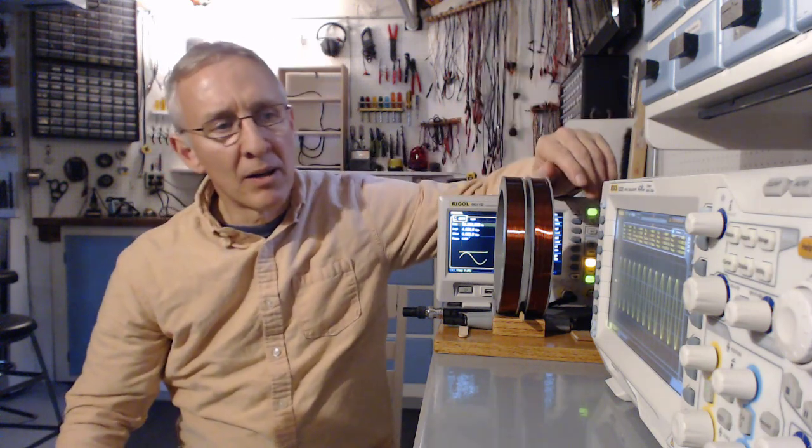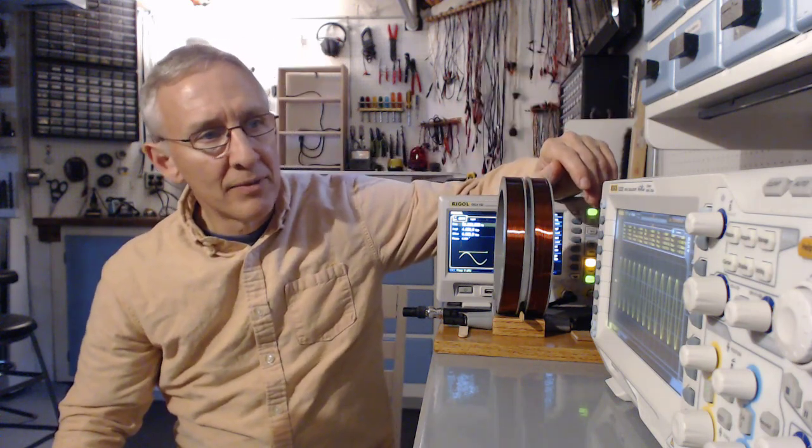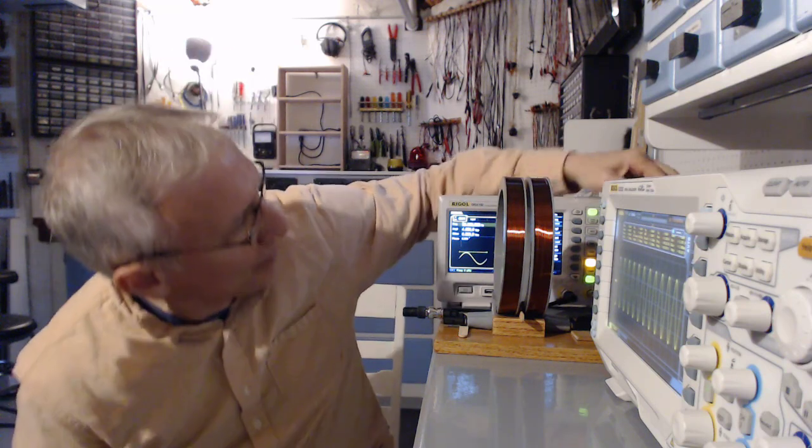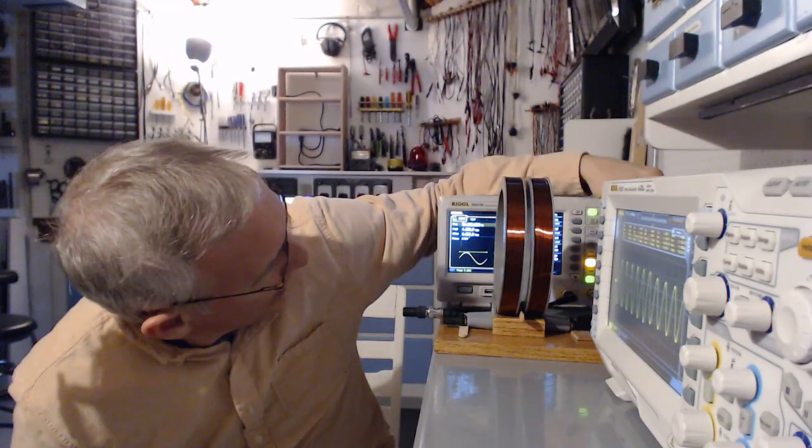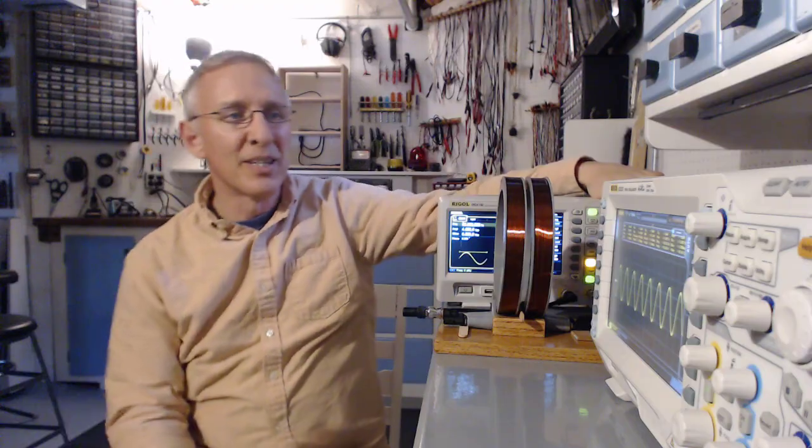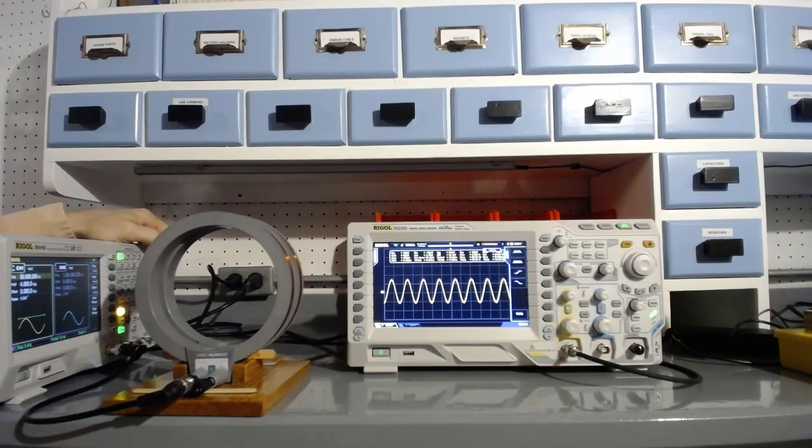We can see on the oscilloscope that our coupling is a sine wave. We are at 90 hertz. Let me back off to 60 hertz. With our 60 hertz field, we have a peak to peak coupled voltage of 270 millivolts.